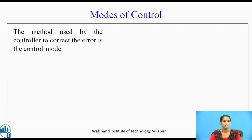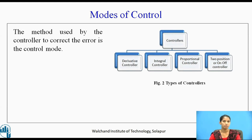The method used by the controller to correct the error is known as the control mode. There are four types of controllers used in the control system: on-off controller, proportional controller, integral controller, and derivative controller. We are going to study these controllers in detail in the further slides.